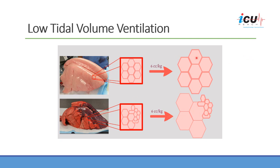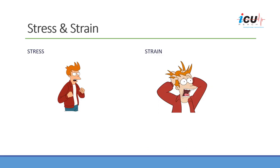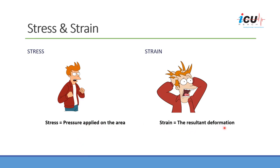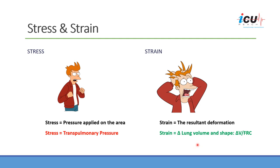So what is stress and strain? In physiology, stress is the pressure applied on an area, and strain is the resultant deformation — the new shape of that material as a result of the stress. In pulmonary physiology, that pressure equals the transpulmonary pressure, which is the difference between tracheal pressure and intrathoracic pressure. Strain is the change of volume and shape of the lung relative to the functional residual capacity.